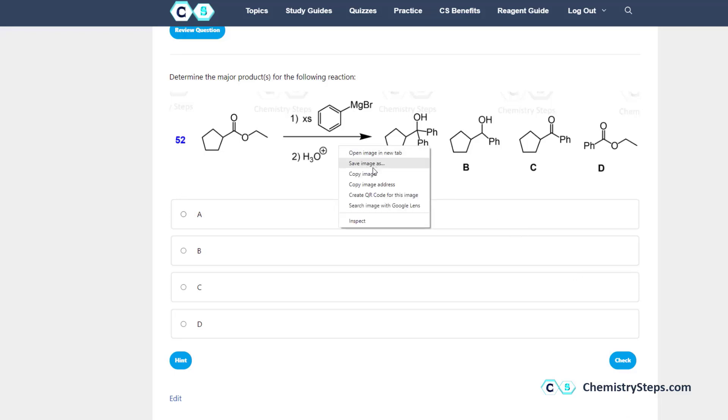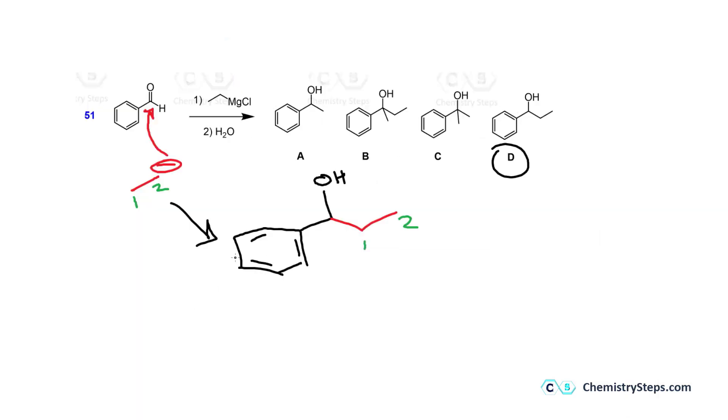Next, so here we have an excess of the Grignard reacting with ester. So let's see how that happens.